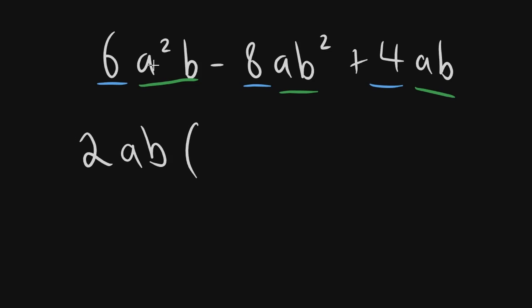You open your brackets. 2ab times by what gives you 6a squared b? That would be 3a, because 2 times by 3 will give you 6 and a times by a will give you a squared.